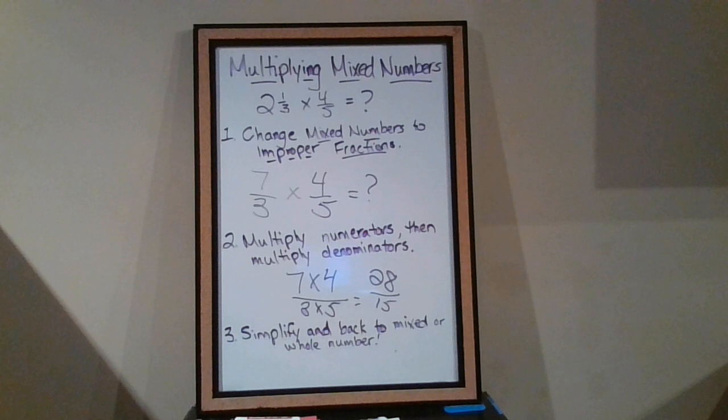So I don't see any way to simplify 28 over 15. What goes into 15? Three, but three does not go into 28. Five goes into 15, but it doesn't go into 28. And 15 itself does not go into 28 either. So what I'm going to do is, to me that's simplified, but I'm going to ask myself, what would it be as a mixed number?